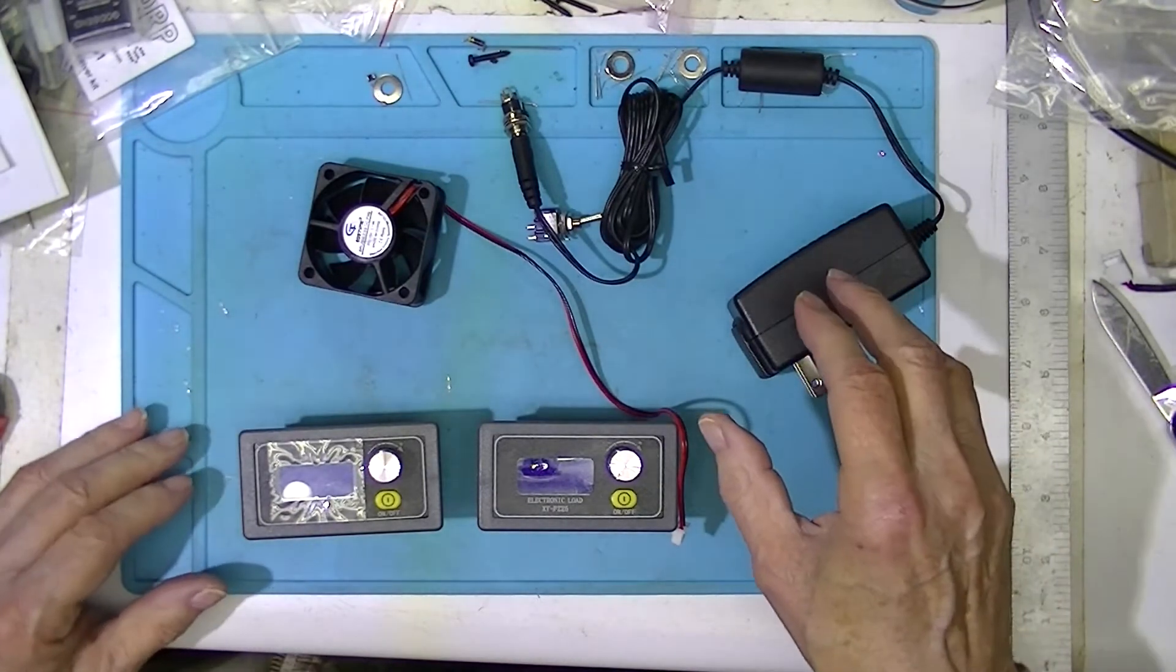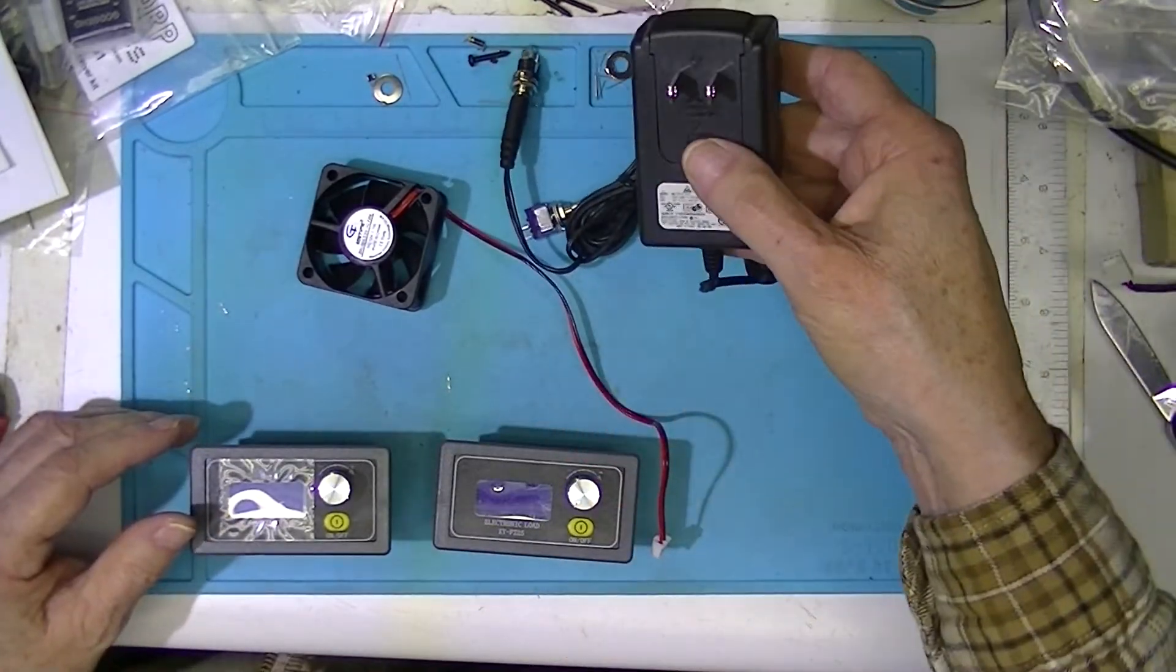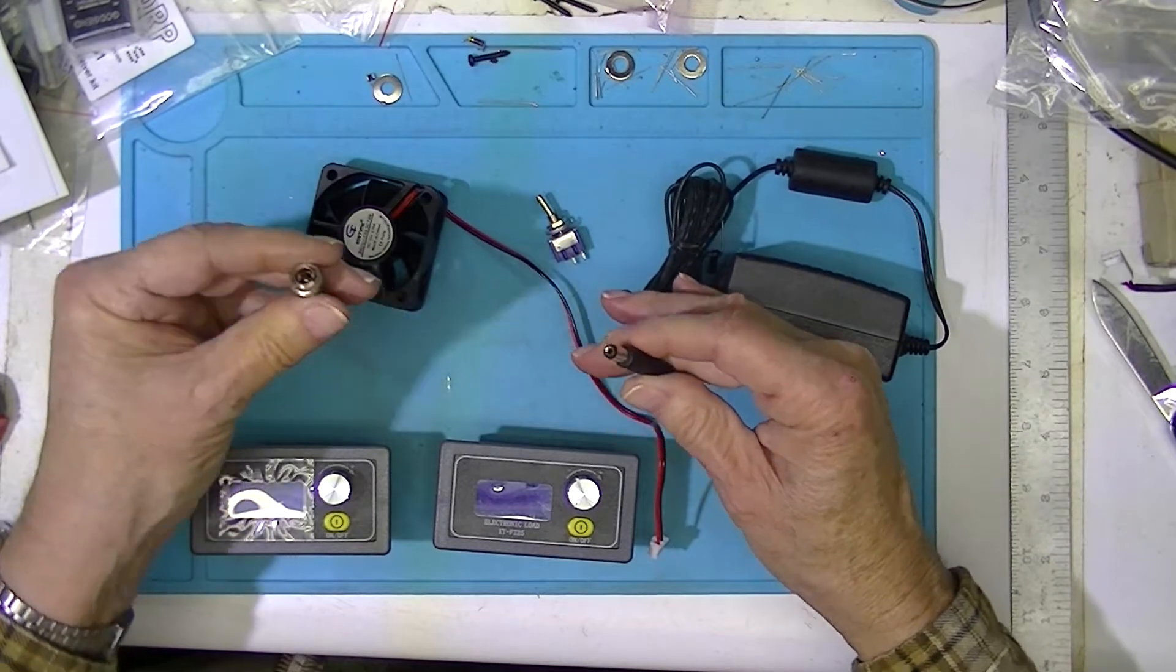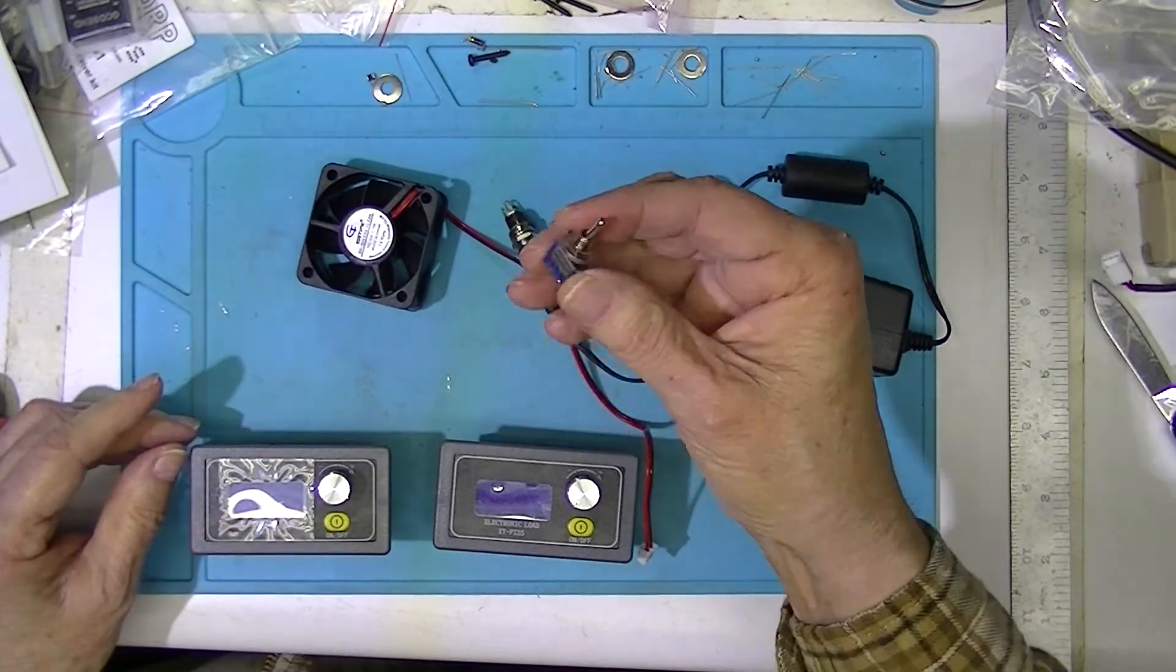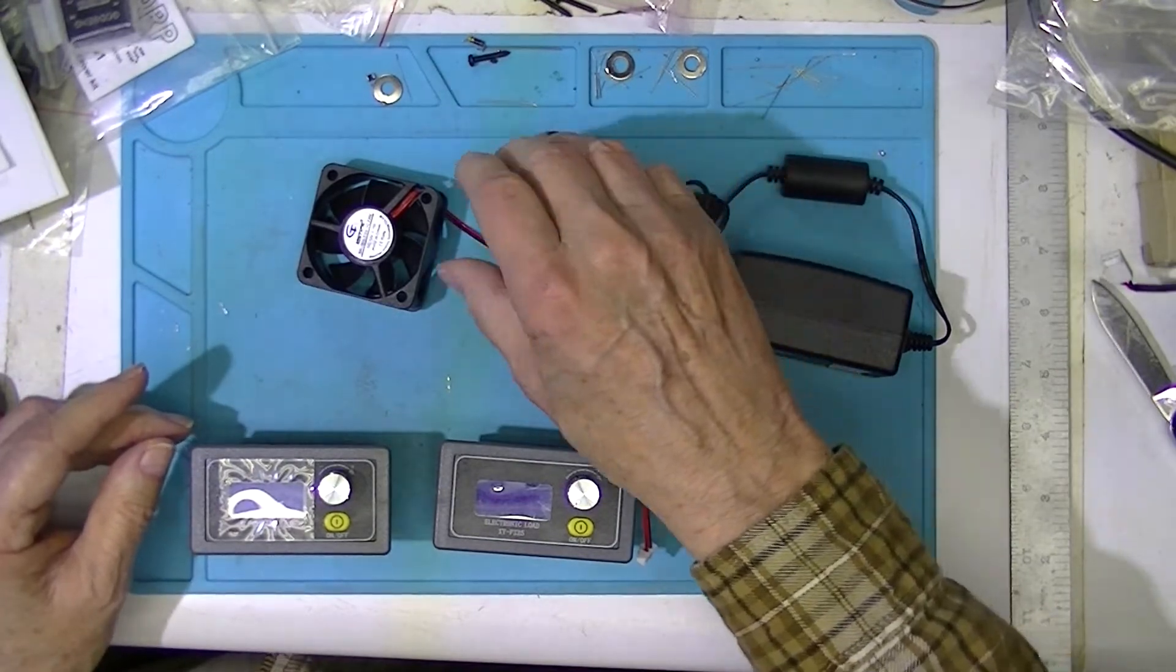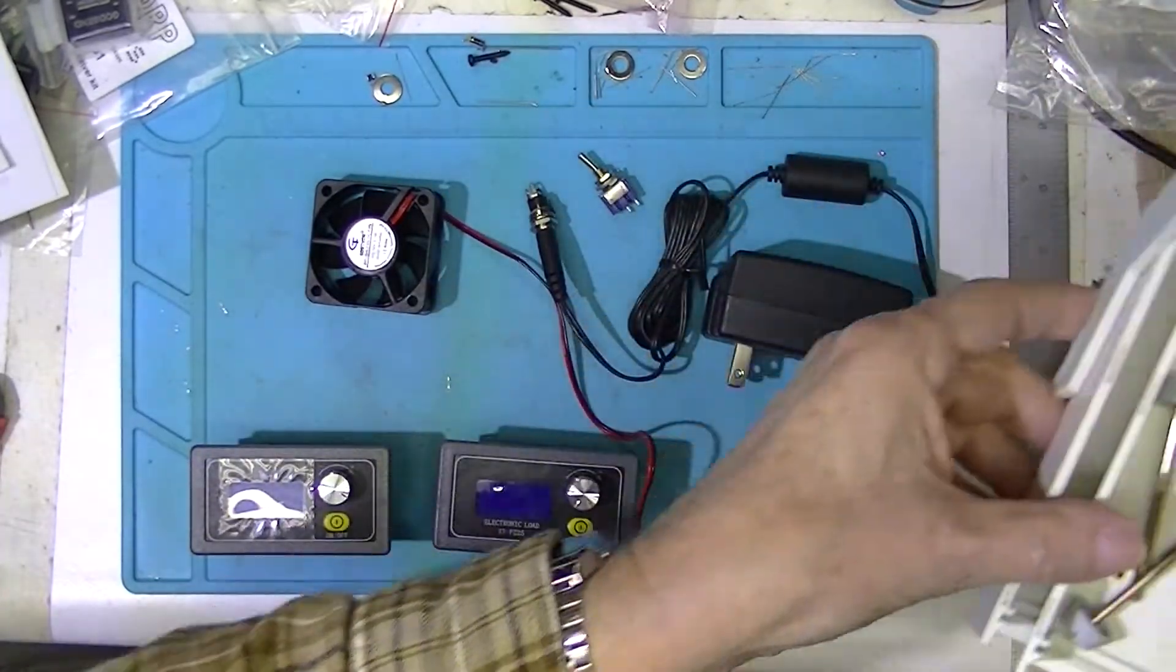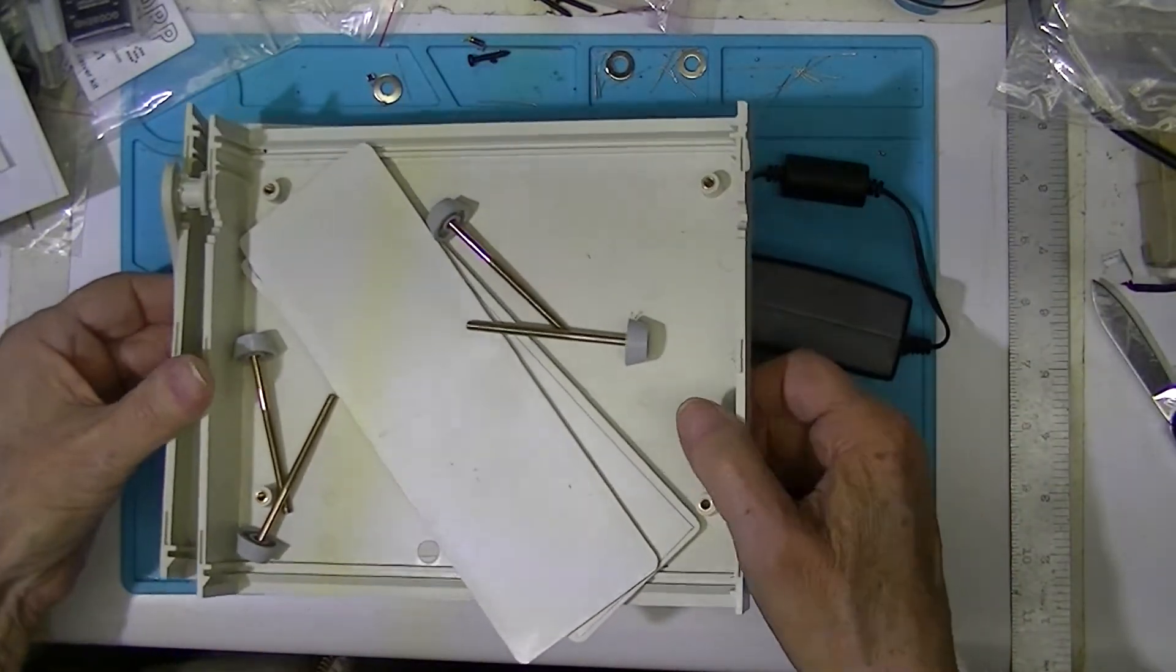Which is two loads, a wall wart 12 volts, a power connector for the wall wart, an on-off switch, single pole single throw, and a 12 volt fan.